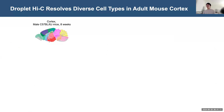After validation on cell lines, we then moved to the adult mouse cortex, which is highly heterogeneous but contains a lot of well-characterized cell types. We carried out two replicates of Droplet Hi-C on mouse cortex. The problem after getting the data is that with only chromatin interaction data, it is quite challenging to annotate the cell type.